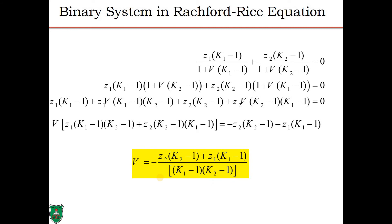For a binary system, the Rachford-Rice equation has two terms: [Z1(K1 − 1)/(1 + V(K1 − 1))] + [Z2(K2 − 1)/(1 + V(K2 − 1))] = 0. Cross-multiplying and rearranging gives a direct expression for the vapor fraction V as: [Z2(K2 − 1) + Z2(K1 − 1)] / [(K1 − 1)(K2 − 1)].